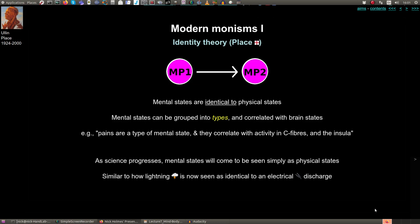The first monism is identity theory. This is also the first in time, coming from the 1950s or so. The idea of identity theory is to say that mental states are identical to physical states — they're just the same thing. In my circles and arrows diagram, there is only one thing that exists: a physical-mental state one causes physical-mental state two.